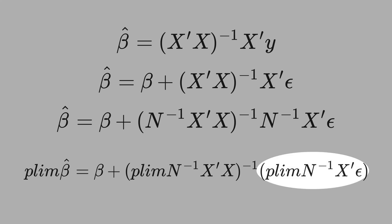Our focus is in this second probability limit because this term here can go to zero. For large sample, if x is uncorrelated with the error term, this goes to zero, and then the probability limit of beta hat will equal beta.